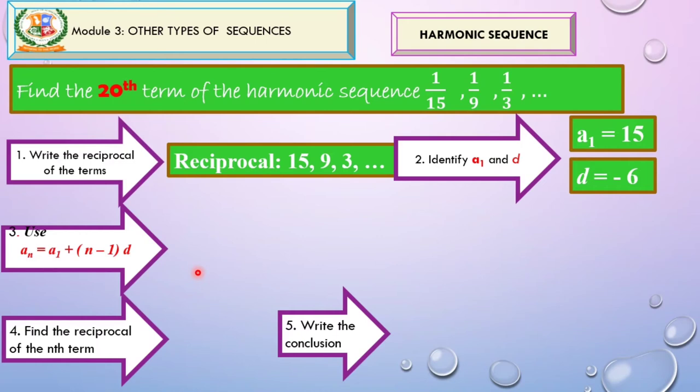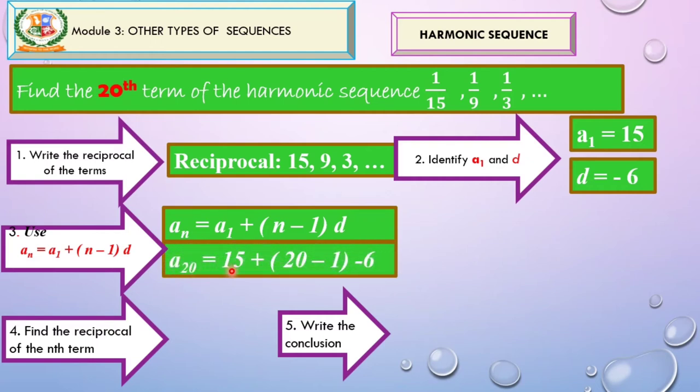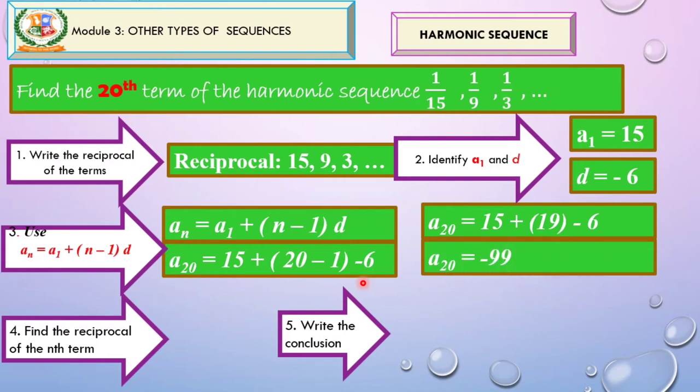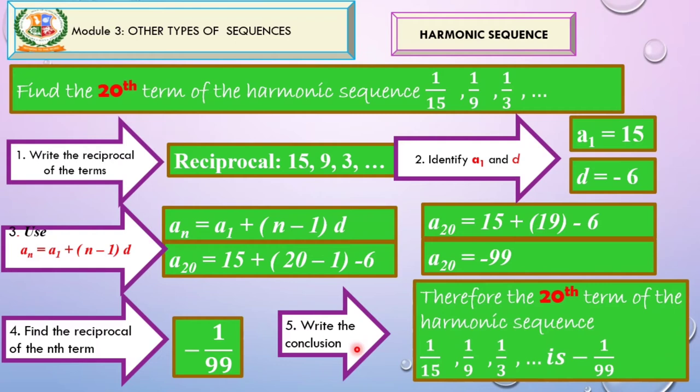So step 3, let us use the given formula. Alright. Then substitute after identifying our A sub 1 and D or the first term and the common difference. So saan galing yung 15? That's the first term. 20, we are asked to find that 20th term. Alright. Minus 1 is the given. D is the common difference. So let's simplify. So 20 minus 1 is 19 times negative 6 plus 15. That's negative 99. Fourth step. Find the reciprocal of the end term. So the end term here is negative 99. So what's the reciprocal? 1 over 99. So that's 1 over 99. So that's good. Then let us try to write our conclusion. Therefore, the 20th term of the harmonic sequence. 1 over 15, 1 over 9, 1 over 3 is negative 1 over 99. So again, play and replay this video in order for you to understand better.